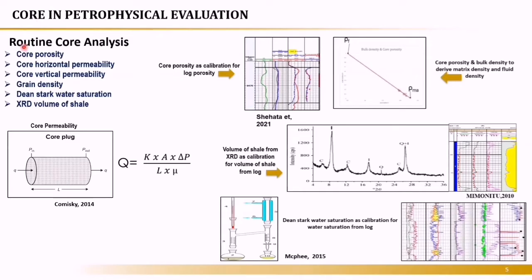Now we will talk about routine core analysis in formation evaluation. Every field should have at least one or two conventional cores to obtain core porosity, core permeability (horizontal and vertical), grain density, residual water saturation, and volume of shale from XRD. This is an example from my paper published last year. The total porosity computed from the density tool had a very good match with core porosity, confirming the formation evaluation is on the right track.